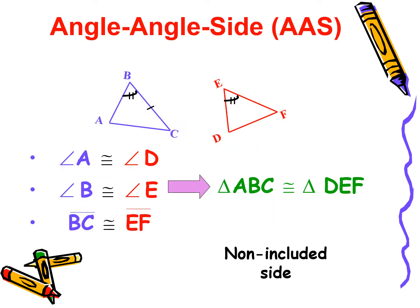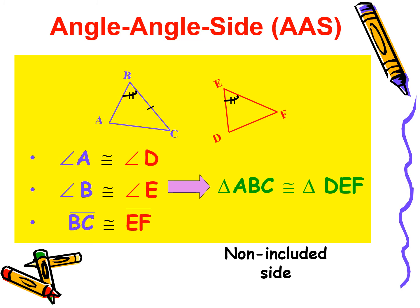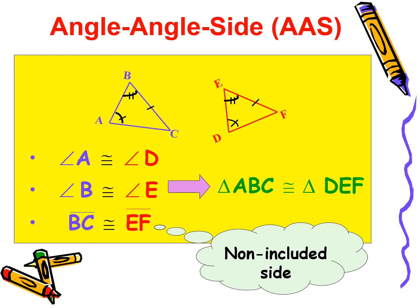The next criteria is Angle-Angle-Side (AAS). If two angles and a non-included side of a triangle are equal to the corresponding two angles and a side of another triangle, then the triangles are congruent. Like in this figure, angle A is congruent to angle D, angle B is congruent to angle E, and side BC is congruent to side EF — then triangle ABC is congruent to triangle DEF. There is no included side concept used here.